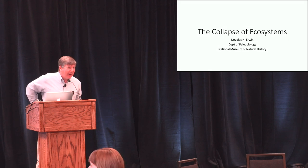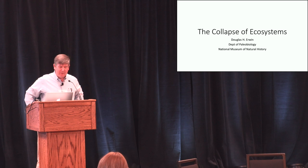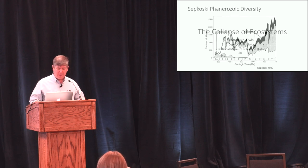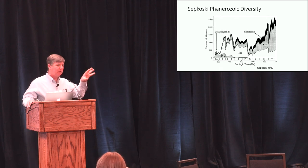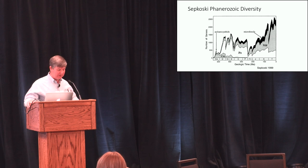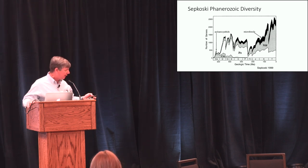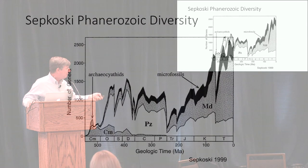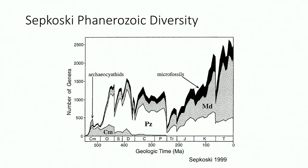My assigned title is 'Collapsed Ecosystems.' I'm going to talk about this initially standing back and then zeroing in on this event — halfway through this diagram here — the end-Permian mass extinction 251 million years ago, which is the biggest divot that you see in that graph.